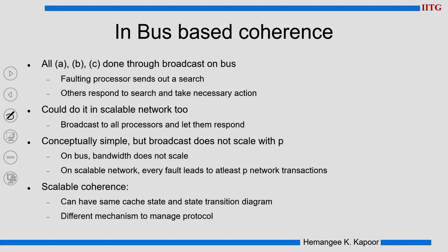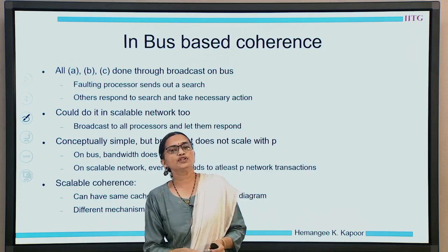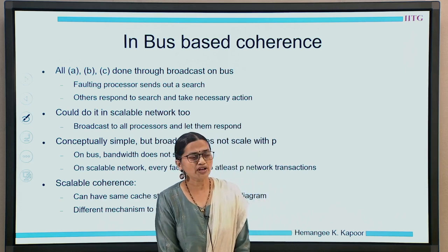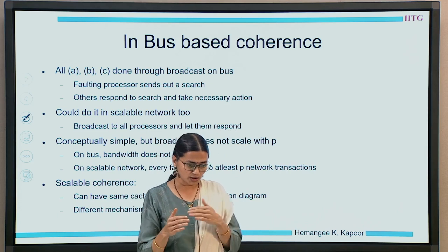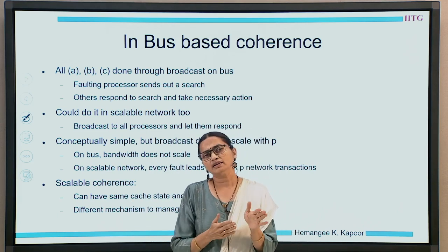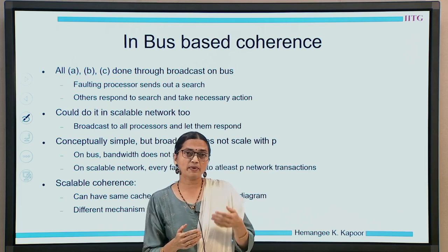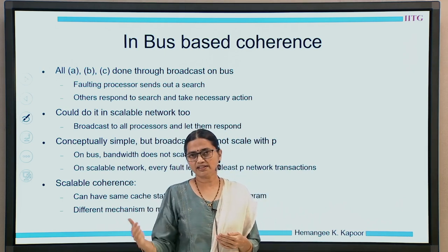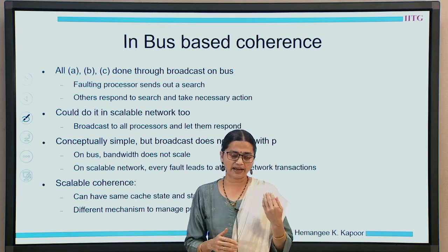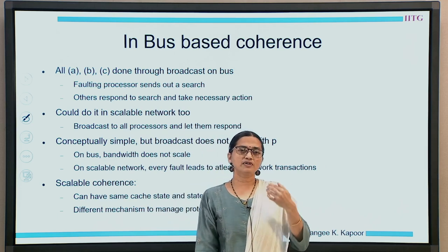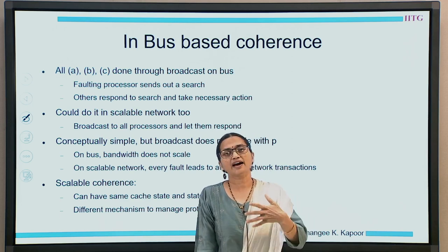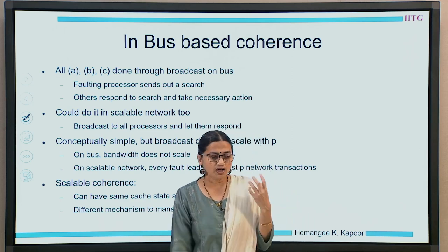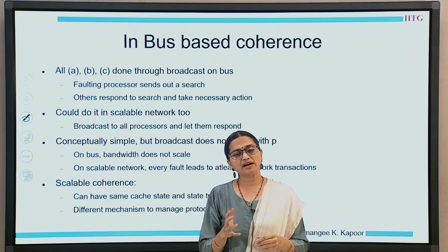Invoking the protocol is the same across snooping or a large-scale system, but how do we implement the other three things — state of the block, how to locate copies, and how to communicate with them — will distinguish the different designs. In bus-based cache coherence, you have a bus which is a broadcast medium; the faulting processor sends a request on the bus. The nodes snoop onto the bus, and snooping implicitly tells them where the blocks are — those nodes know they have the block and take appropriate action, raising the wired-or shared signal, the dirty signal, etc.